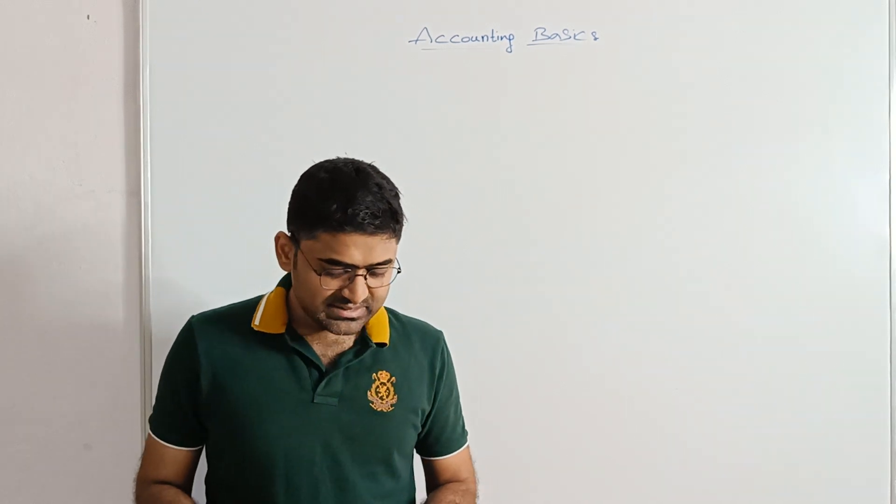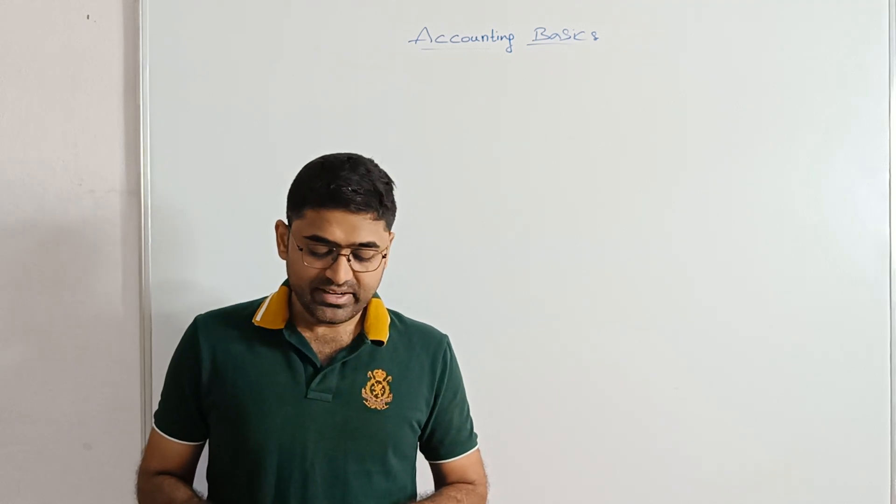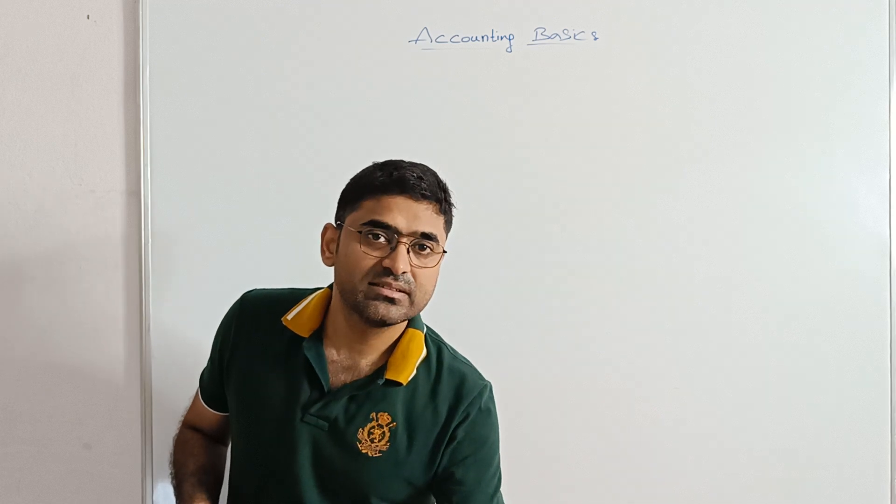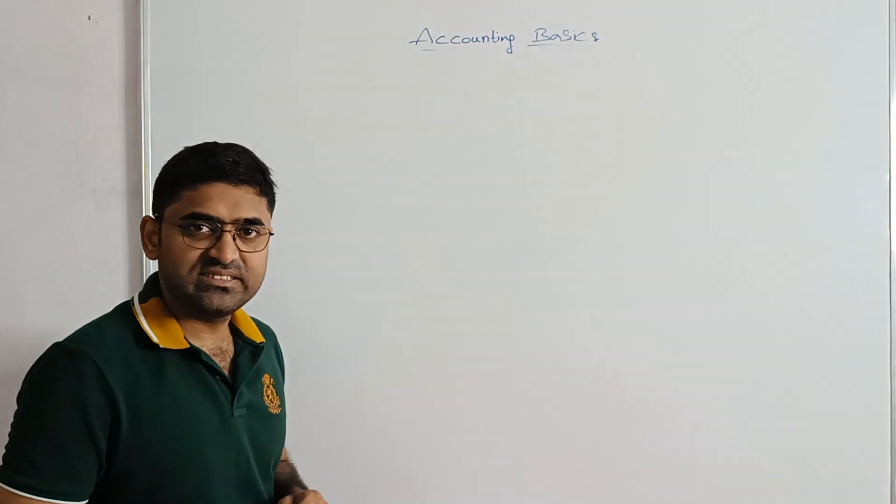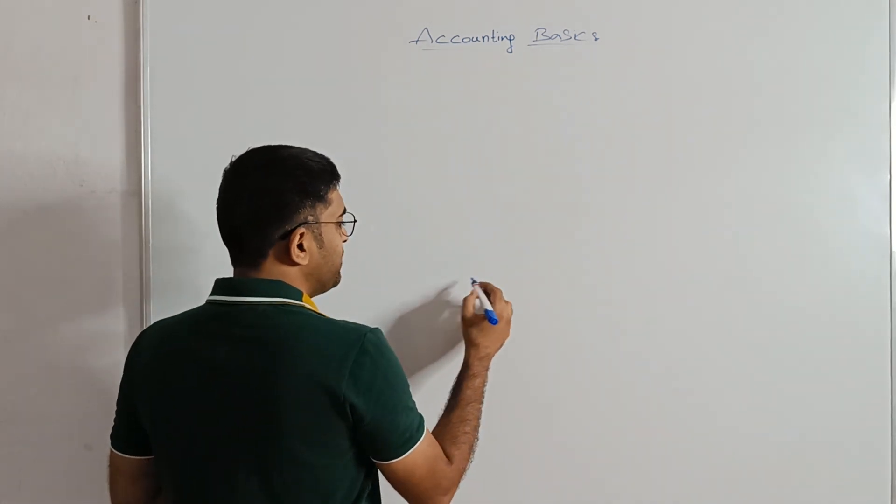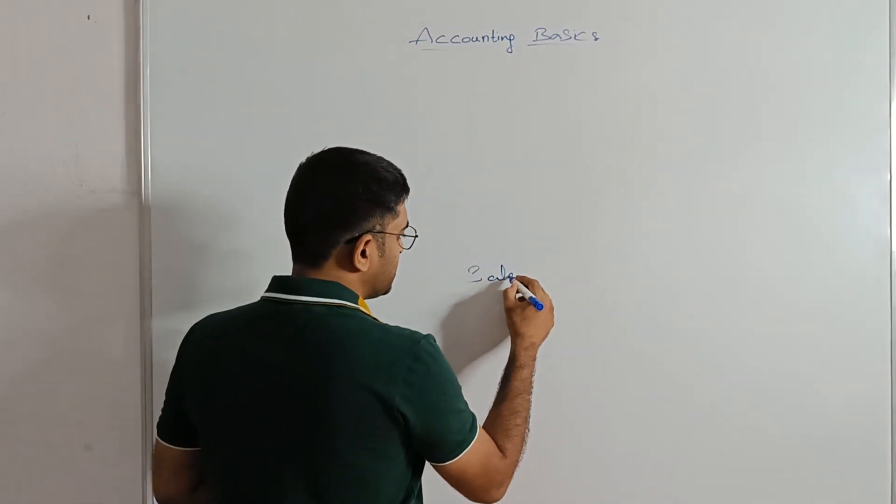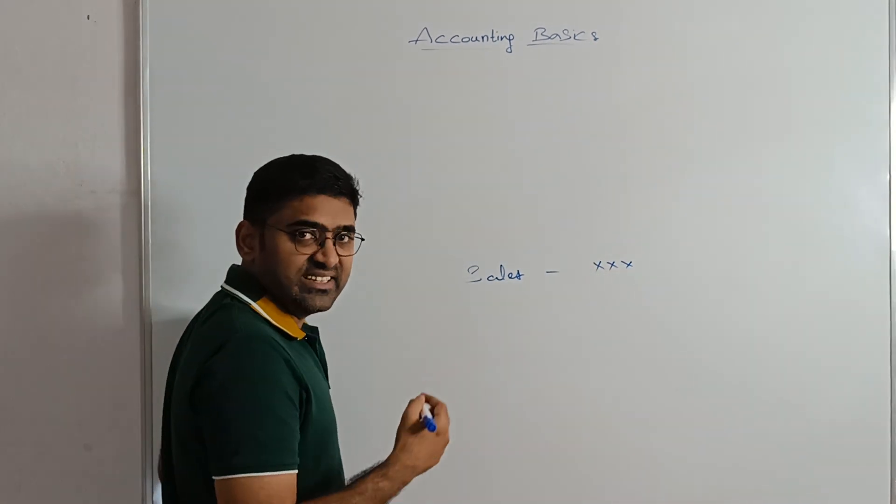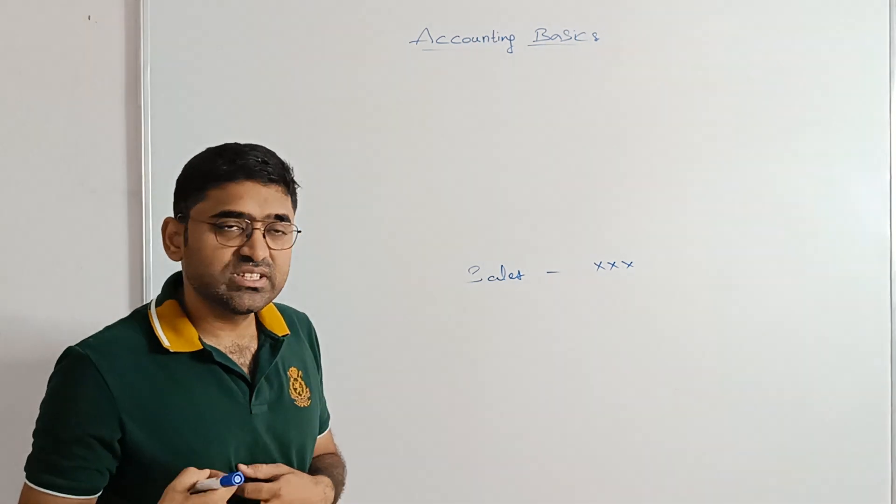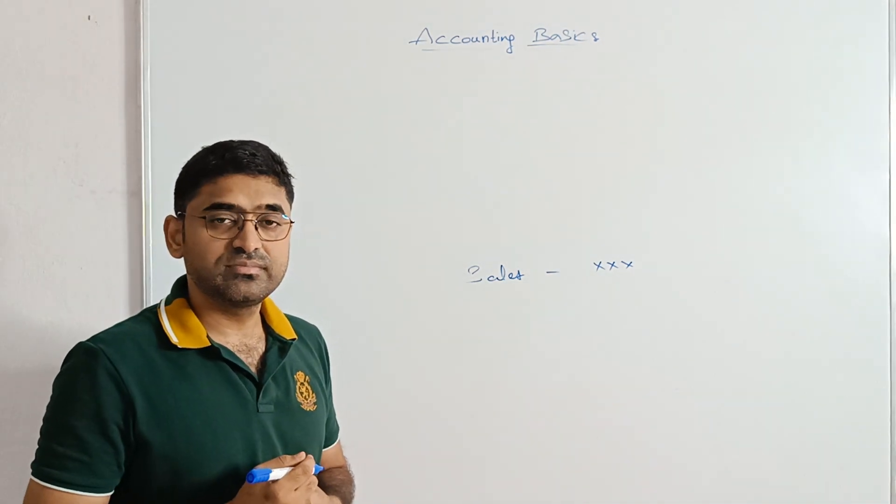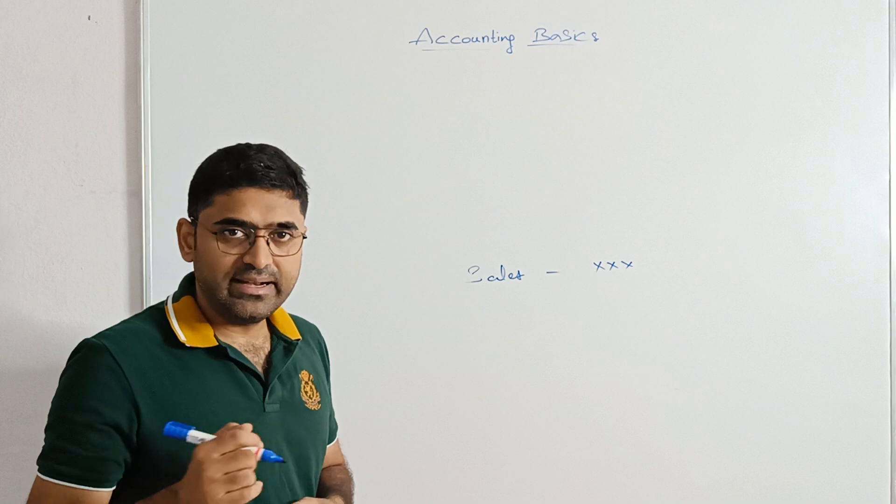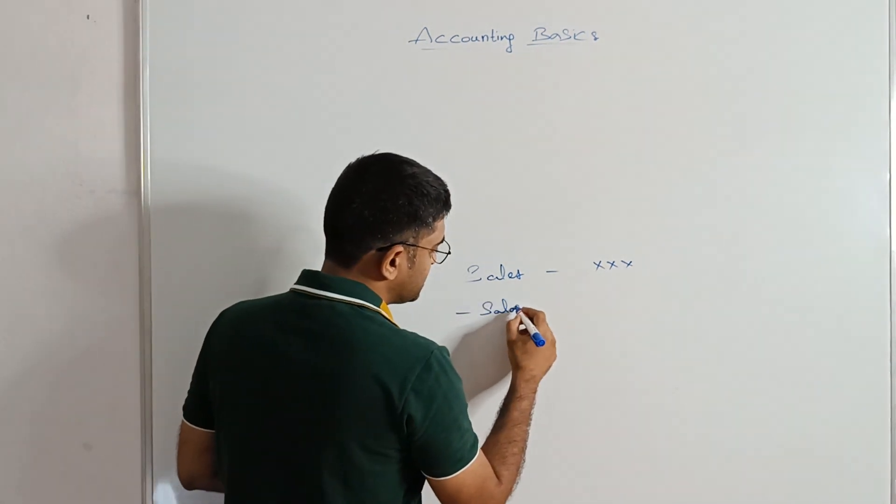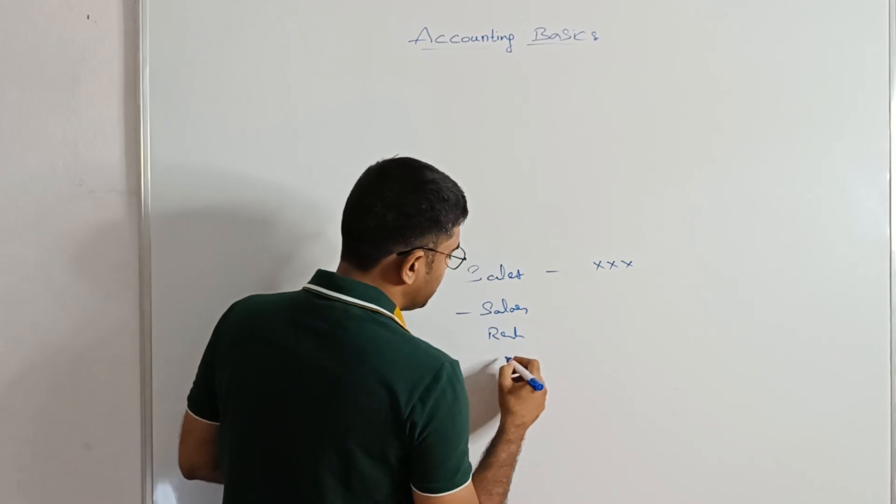When a company makes money, it has to keep track of where the money comes from and where it is going. If a person runs a business or a company, he will make some sales. To make the sales, he needs to get some goods, he needs to purchase some goods, spend some money on salaries, rent, etc. So salaries, rent, expenses.